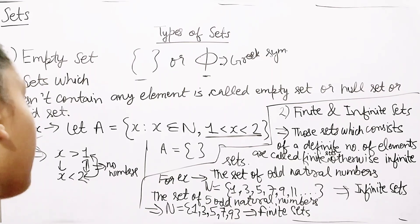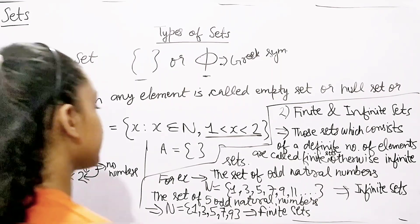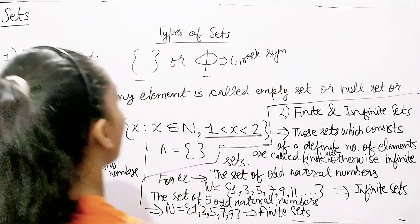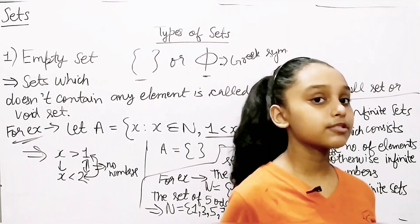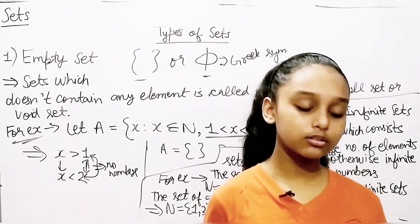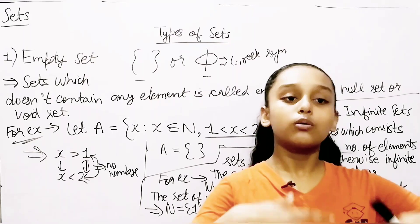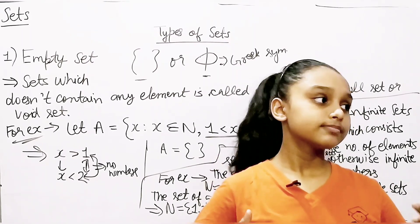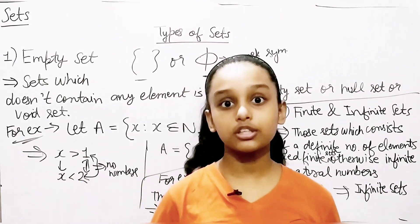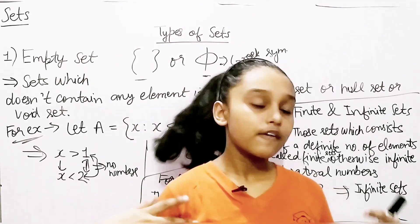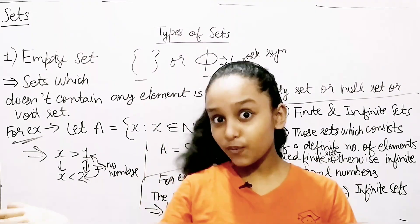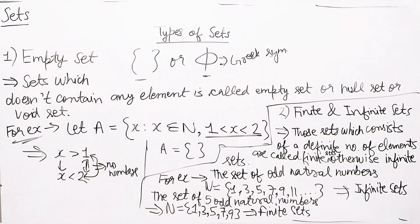Is it clear? I think so. This is how we can identify which are infinite sets and which are finite sets. We'll also study some more types of sets like equal sets, subset, singleton sets, and more — we'll cover all those types soon. I think that's all for today. In the next video we're going to continue with the types of sets. Thanks for watching and have a great day.